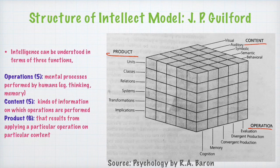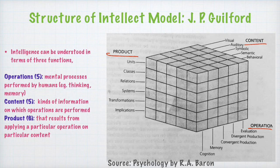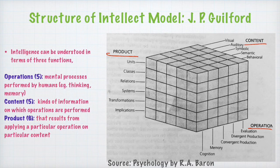Contents refer to the kinds of information available to us in the environment. Visual content is information collected through our visual apparatus. Auditory is information collected with the ears. Symbolic refers to information in the form of symbols — for example, all mathematics is in the form of symbols. Semantic refers to meaning in any information, so when you read a sentence and try to grasp its meaning, you are operating on semantic content. Behavioral content refers to body movements — for example, when learning dance and imitating your teacher, you are performing on information in the form of behavioral responses or patterns.